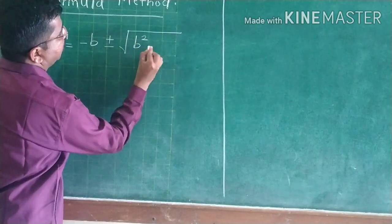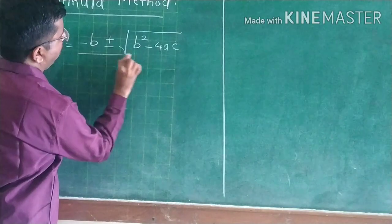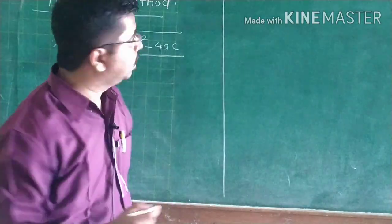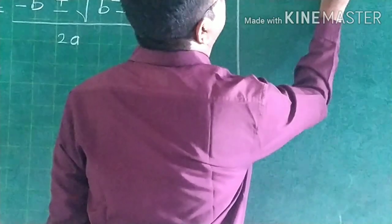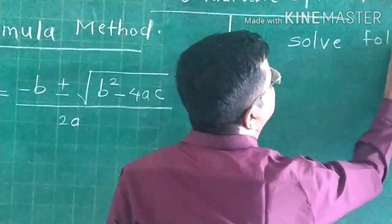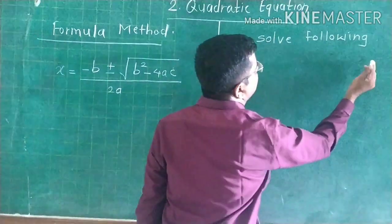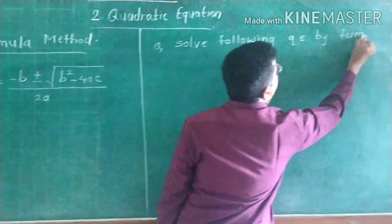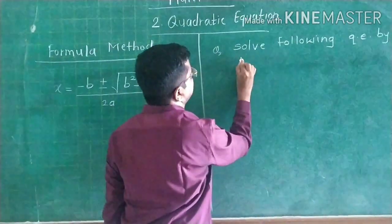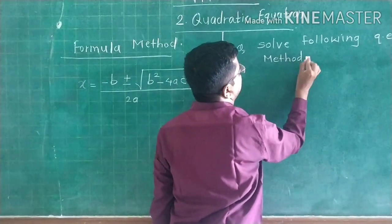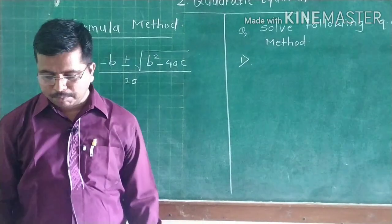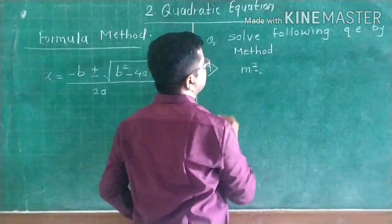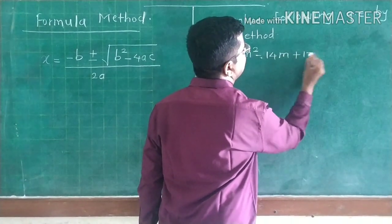The formula is: x equals minus b plus or minus the square root of b squared minus 4ac, all upon 2a. Our first example: solve the quadratic equation m squared minus 14m plus 13 equals 0 by the formula method.